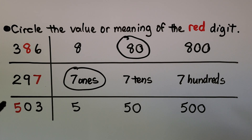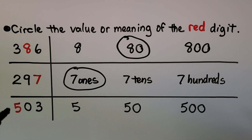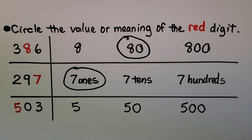Here we have the number 503 — the red digit is the 5. Is the value of this red digit 5, 50, or 500? If you said 500, you're right!